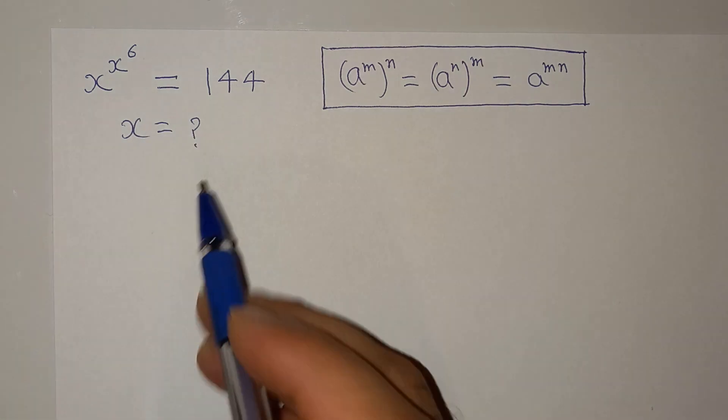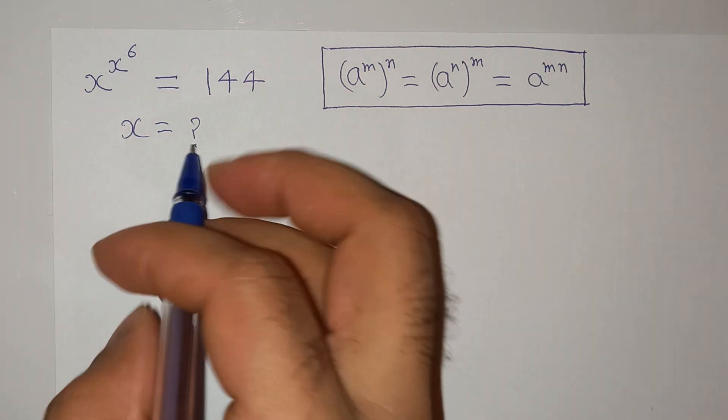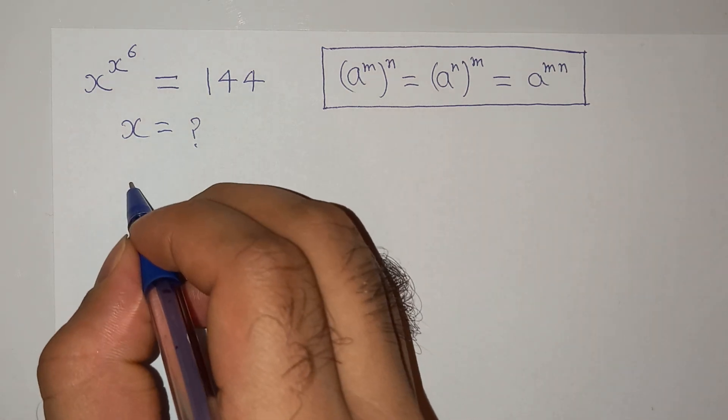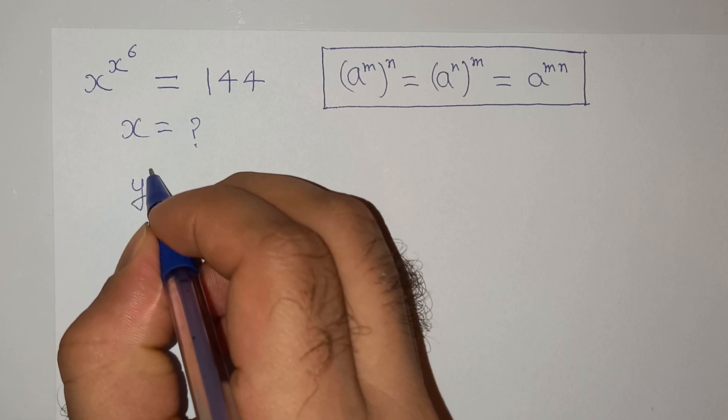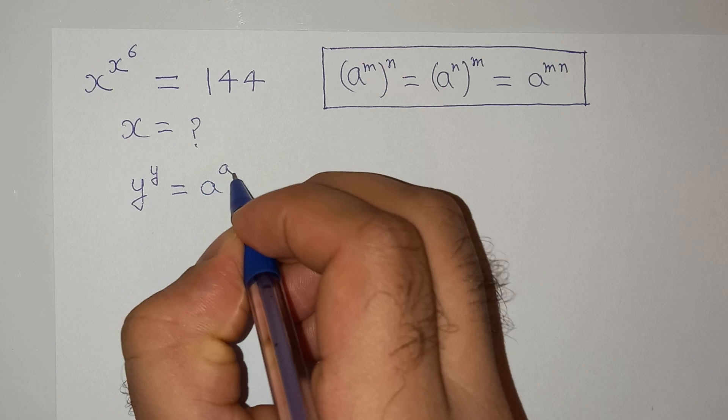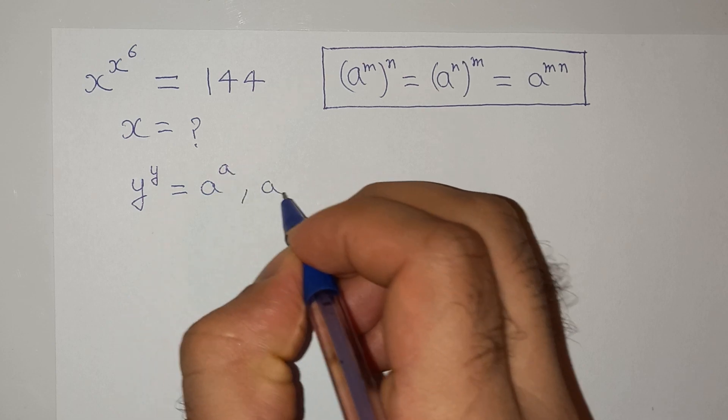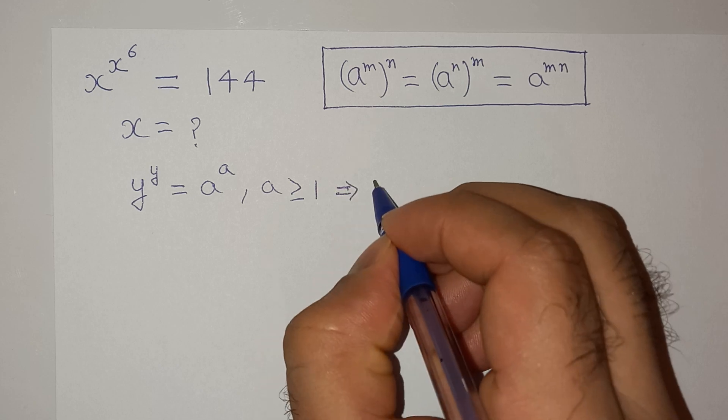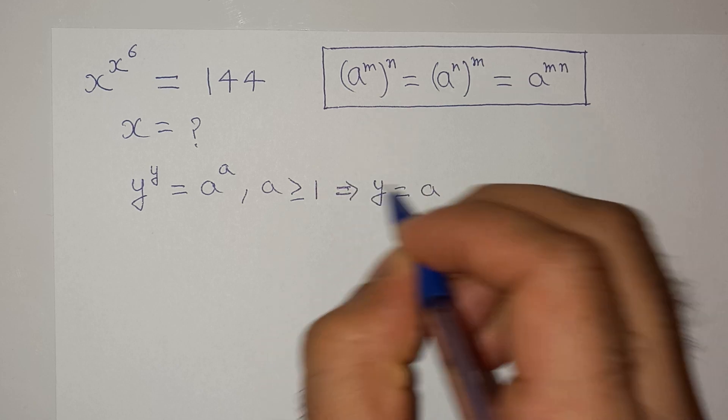So let's try to solve this question. Before solving, I would like to tell you about this rule: if y^y = a^a and the condition is a ≥ 1, then we can say that y = a.